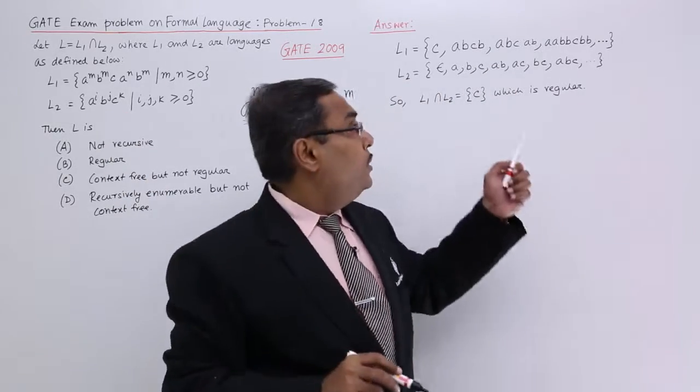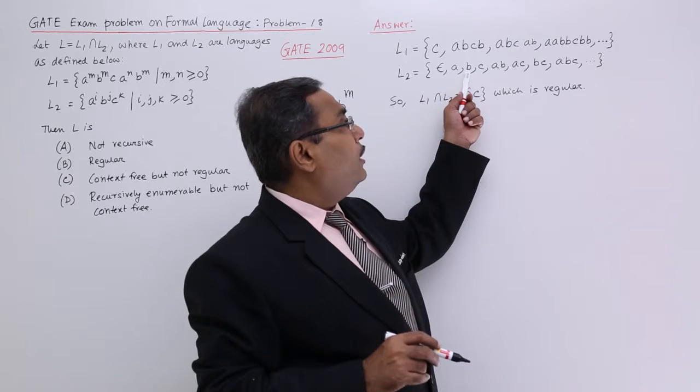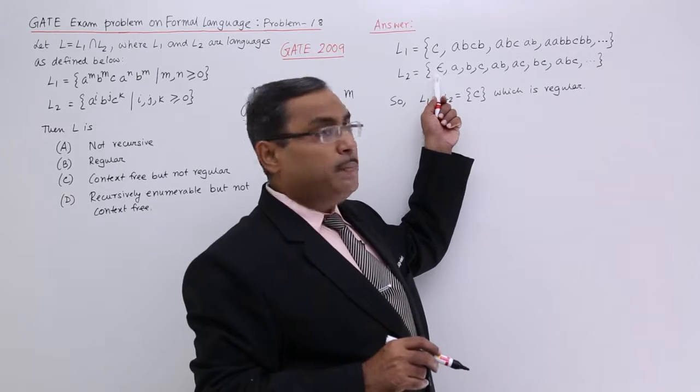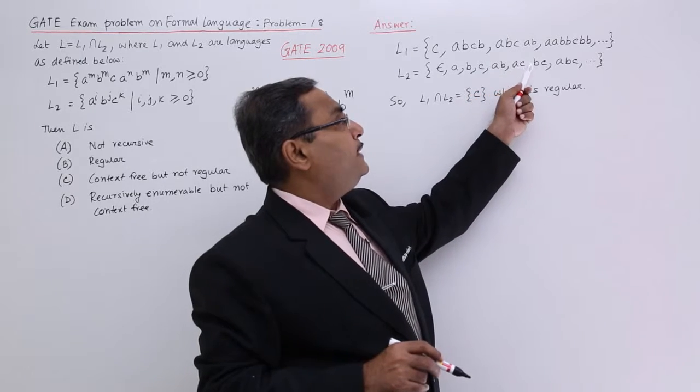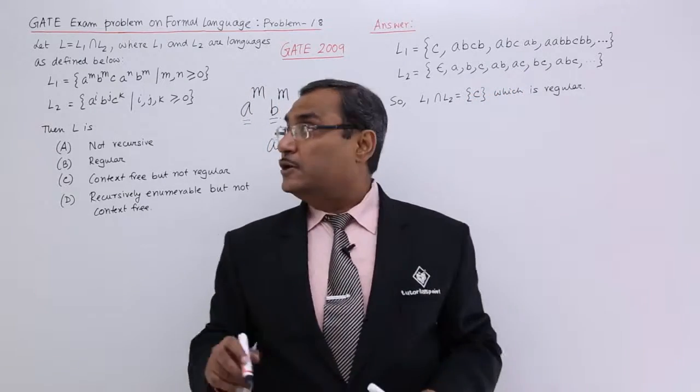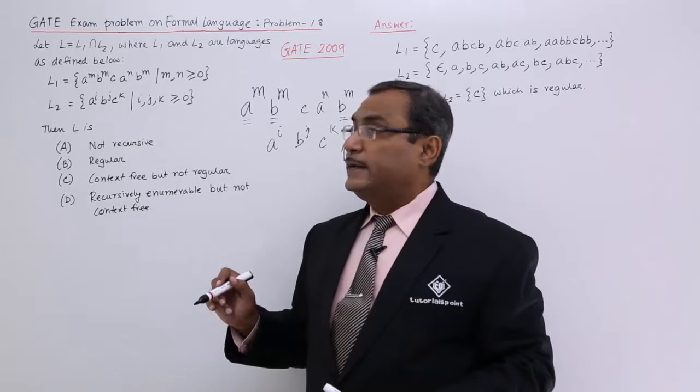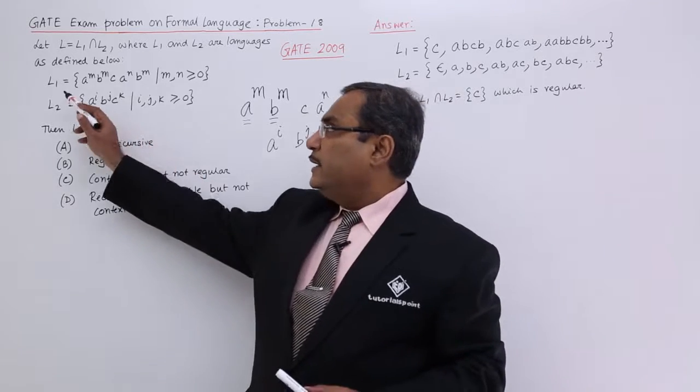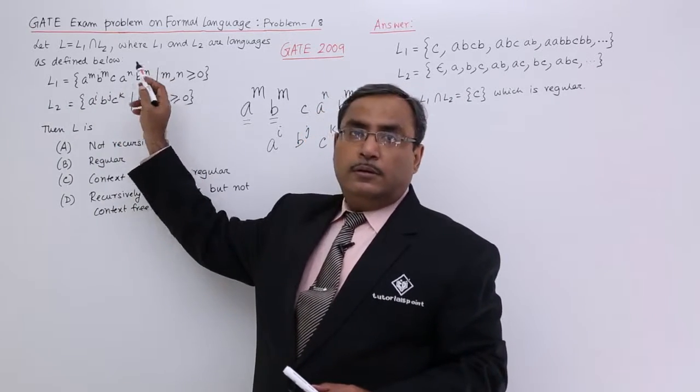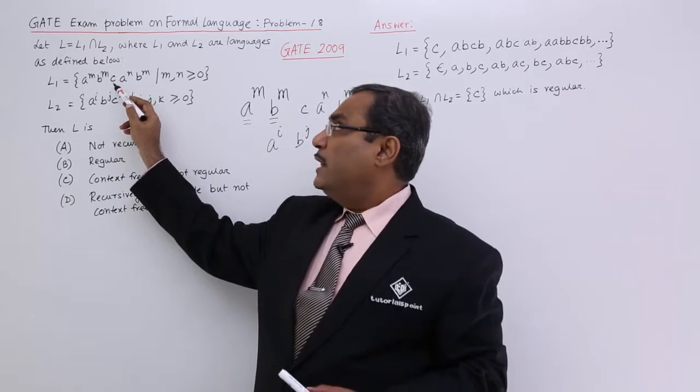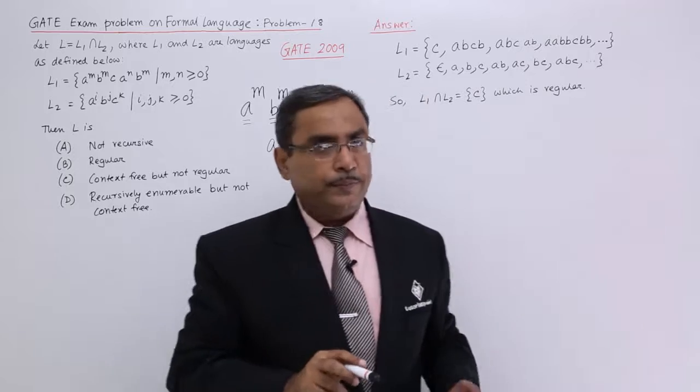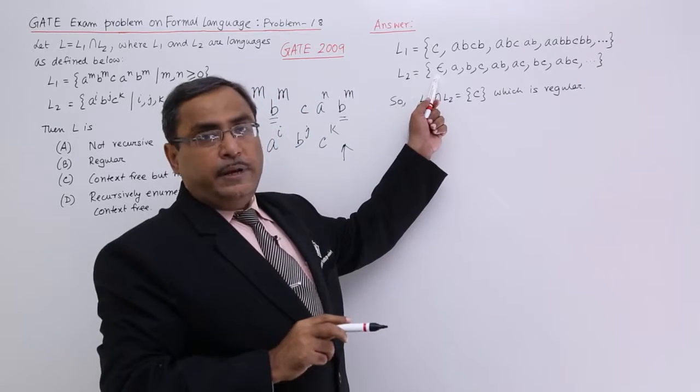Consider L2. We are having only 1 A, only 1 B, only 1 C, epsilon may be there. We are having AB, AC, BC, ABC, and so on. So in this way, things can take shape. And another thing is that L1 cannot be epsilon and L1 cannot be null, because at least 1 C will be there, but here L2 can be null.